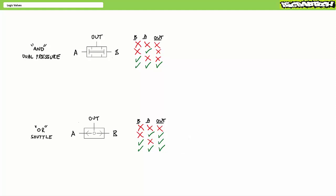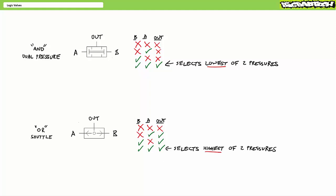Beyond the logical operation of these two valves, they also exhibit pressure selection. When both air pilot A and B are present for an AND valve, the AND valve selects the lowest of the two pressures. Whereas when both air pilot A and B are present for an OR valve, it selects the highest of the two pressures.